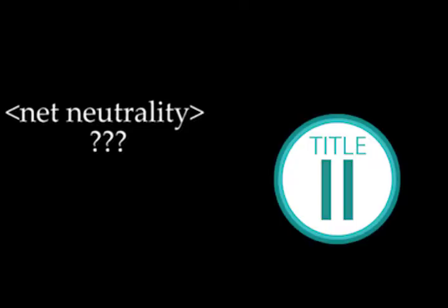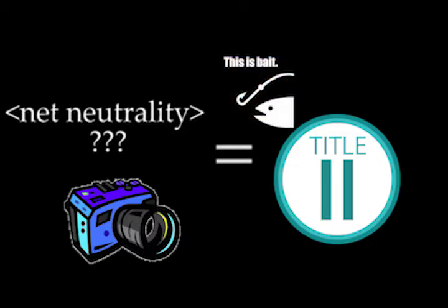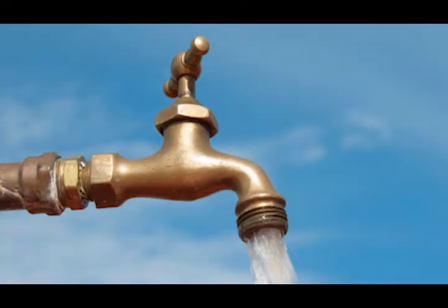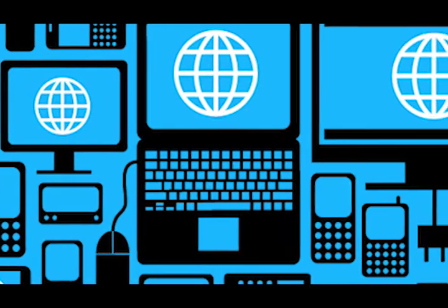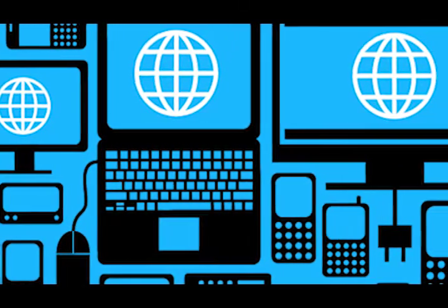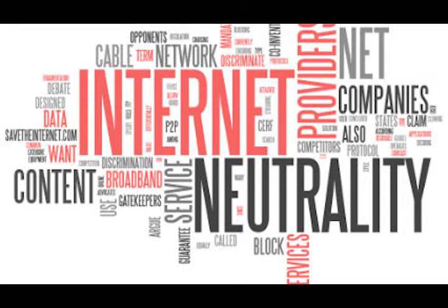The issue is further complicated by the fact that the terms net neutrality and Title II are being used as though they are synonymous by the general media and websites that enjoy your ad revenue when you visit them out of panic. Title II was created in the 1930s to regulate public utilities. The new open internet order, or net neutrality as it is also known, was implemented in 2015 and overruled the existing open internet order at the time.